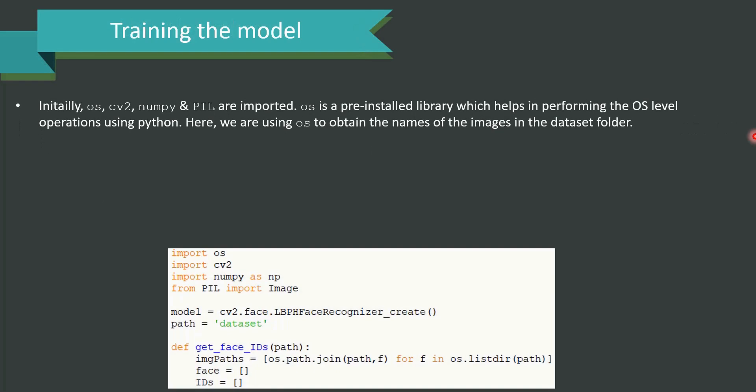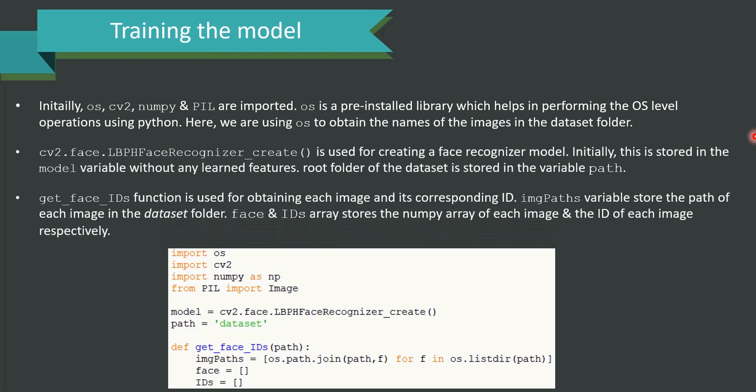Training the model. Initially, os, cv2, numpy and PIL are imported. os is a pre-installed library which helps in performing the os-level operations in python. Here we are using os to obtain the names of the images in the dataset folder. cv2.face.LBPHFaceRecognizer_create is used for creating the face recognizer model. Initially, this is stored in the model variable without any learned features. Root folder of the dataset is stored in the variable path.